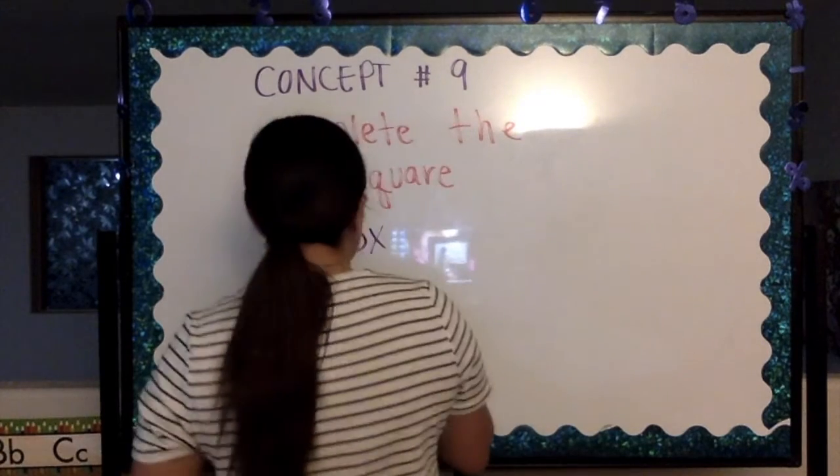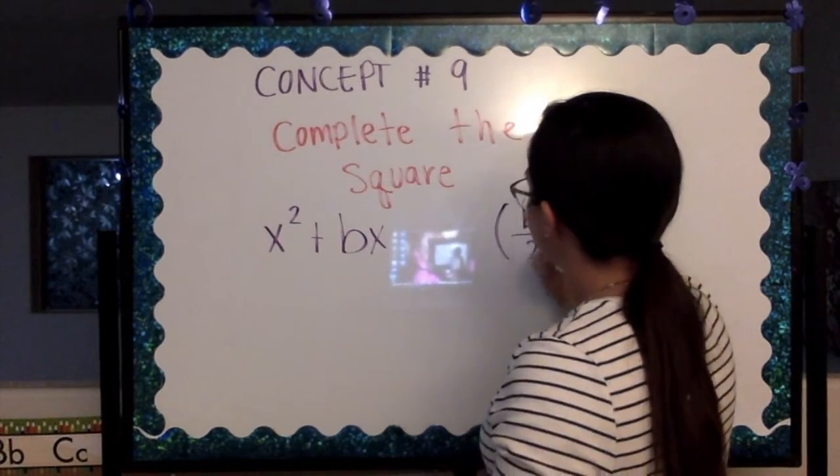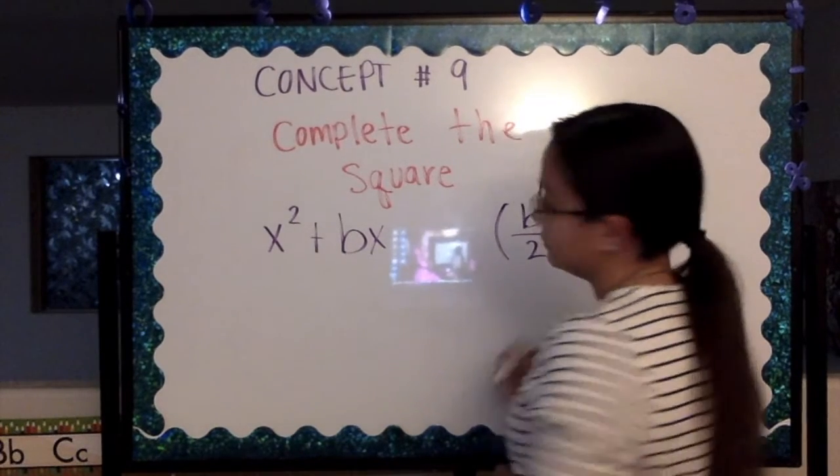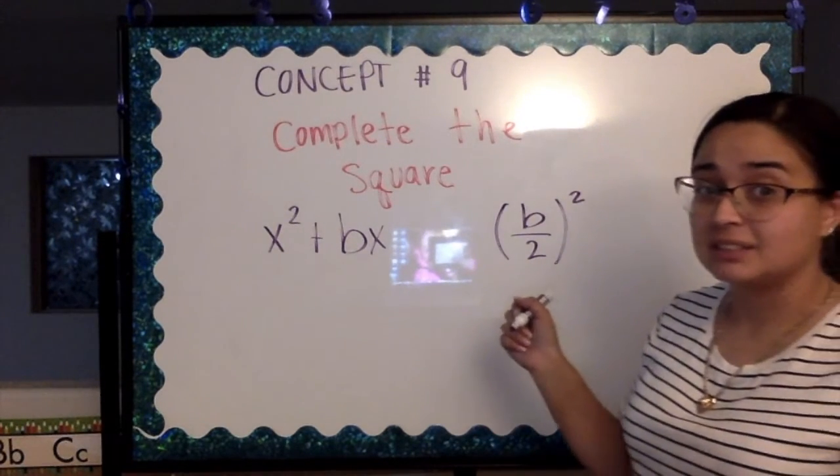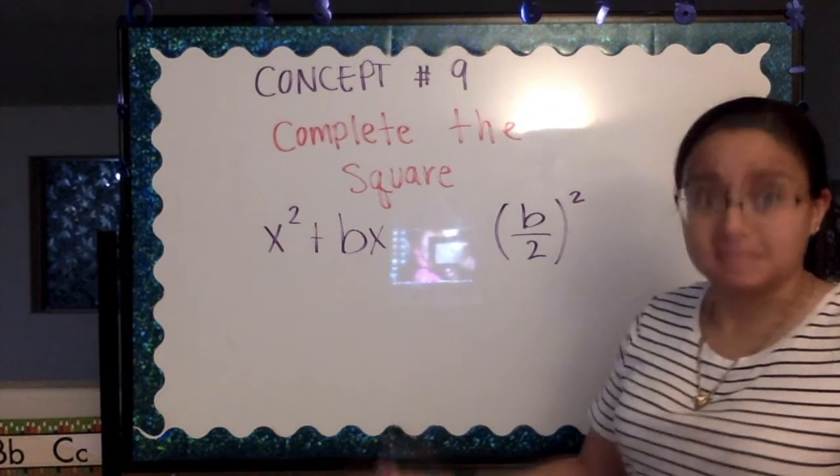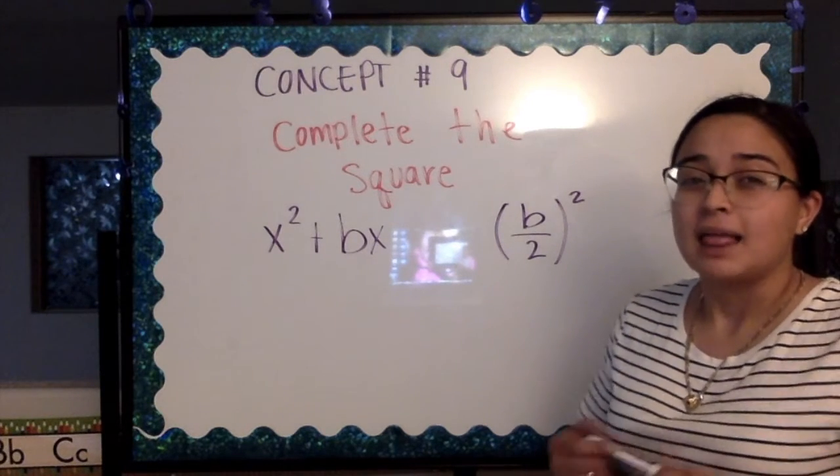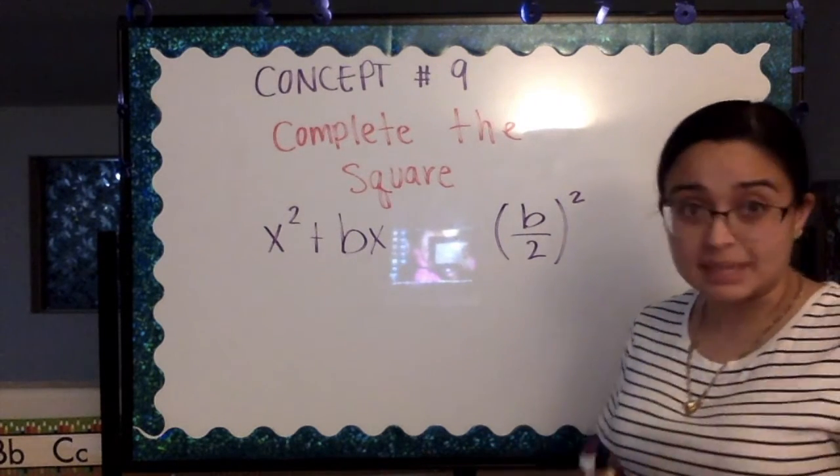We can take our b divided by 2 squared. That is actually going to give us the completed square, or in some cases it would be c for a perfect square trinomial. Let's go ahead and see how it would work with an example.